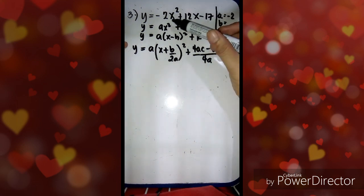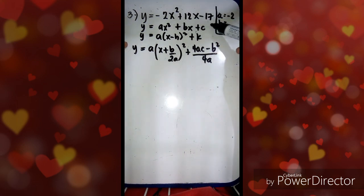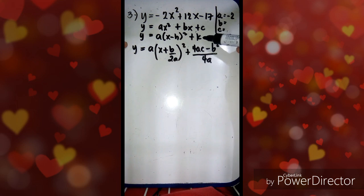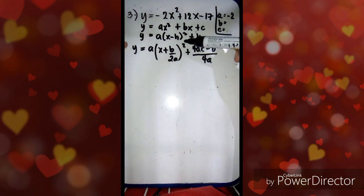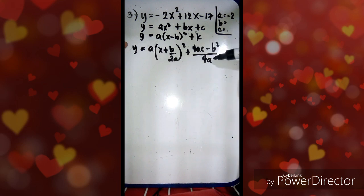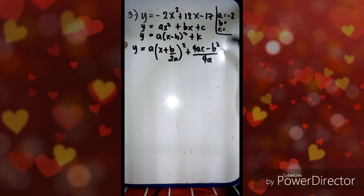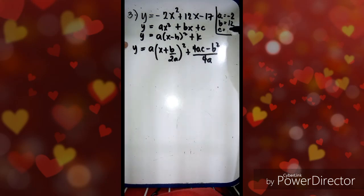Number 3: we have y equals negative 2x squared plus 12x minus 17. Again, this is the general form and we're going to transform it into vertex form, which is y equals a times the quantity of x minus h squared plus k. We're going to substitute a, b, and c. Our a is negative 2, b is 12, and c is negative 17.